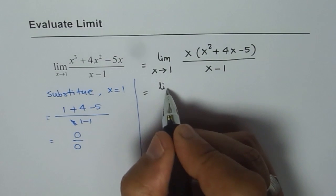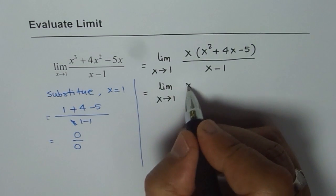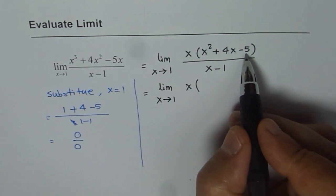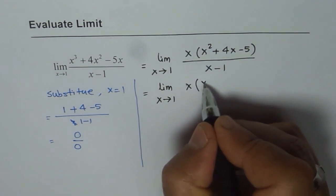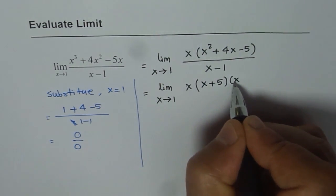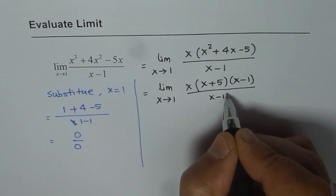Now we can factorize that, which is x approaches 1. So we are looking for two numbers whose product is minus 5 and sum is plus 4. So that means it is x plus 5 times x minus 1 divided by x minus 1.